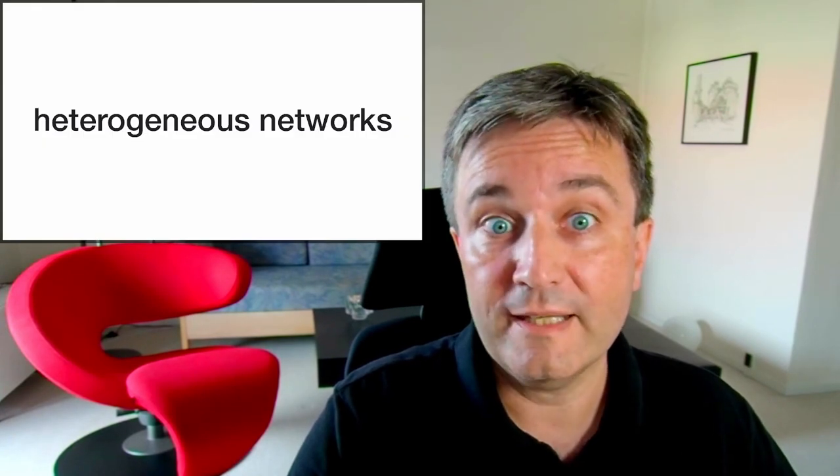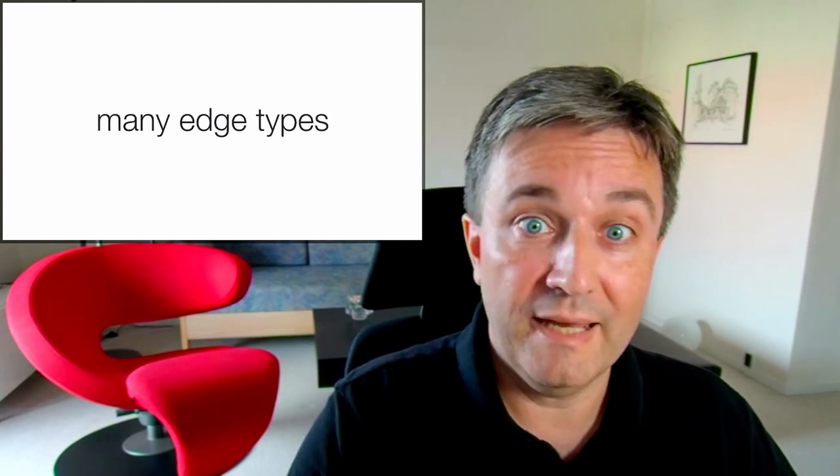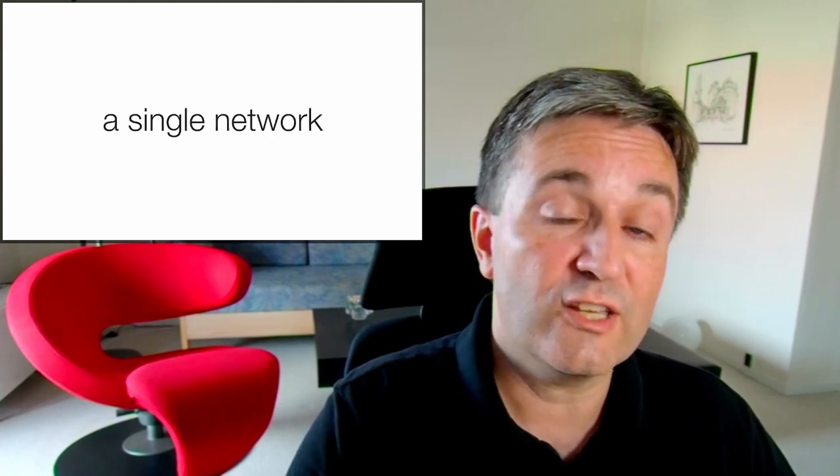To have a knowledge graph, you normally need to have a heterogeneous network. That is, we need many node types and many edge types, all within a single network.